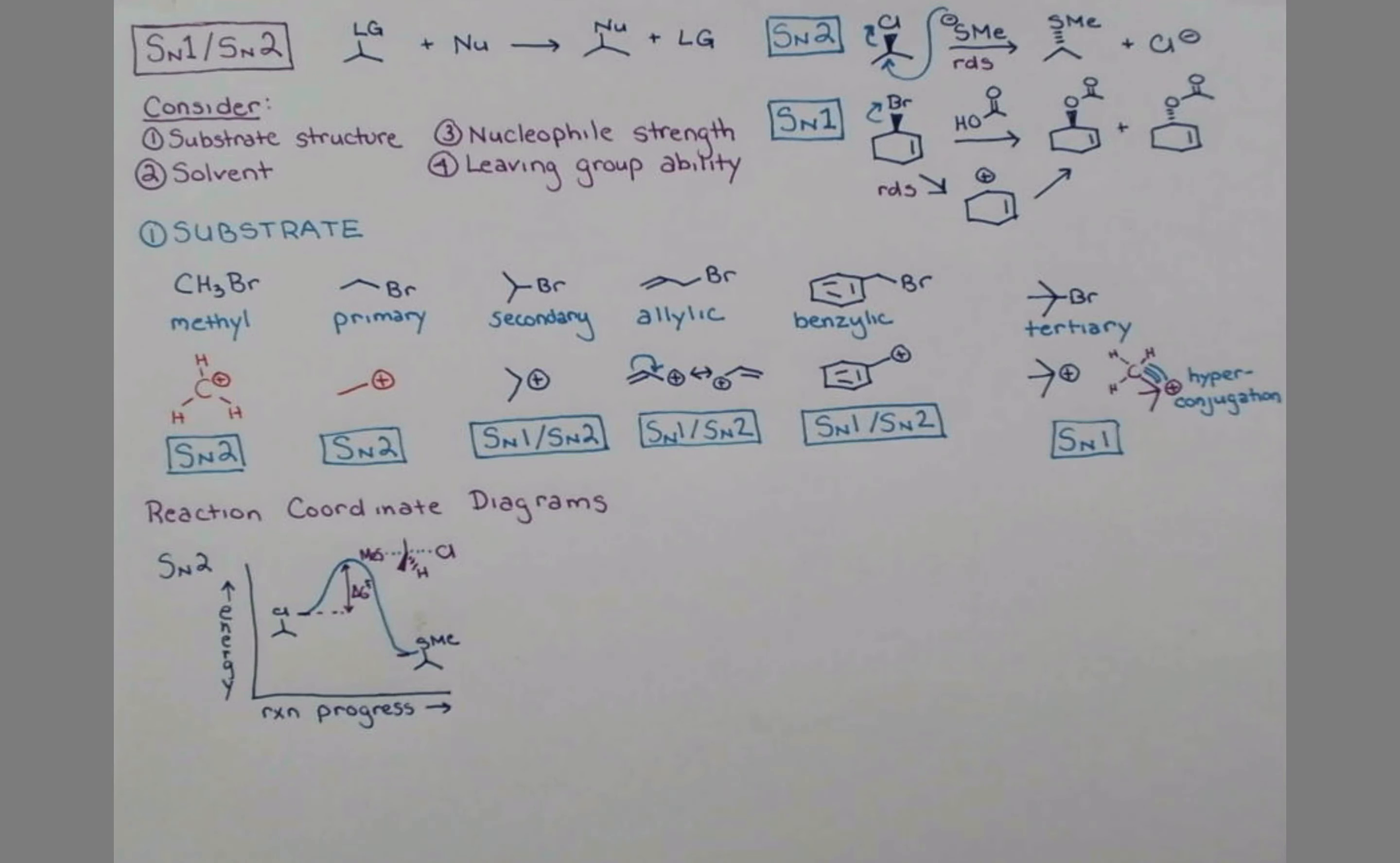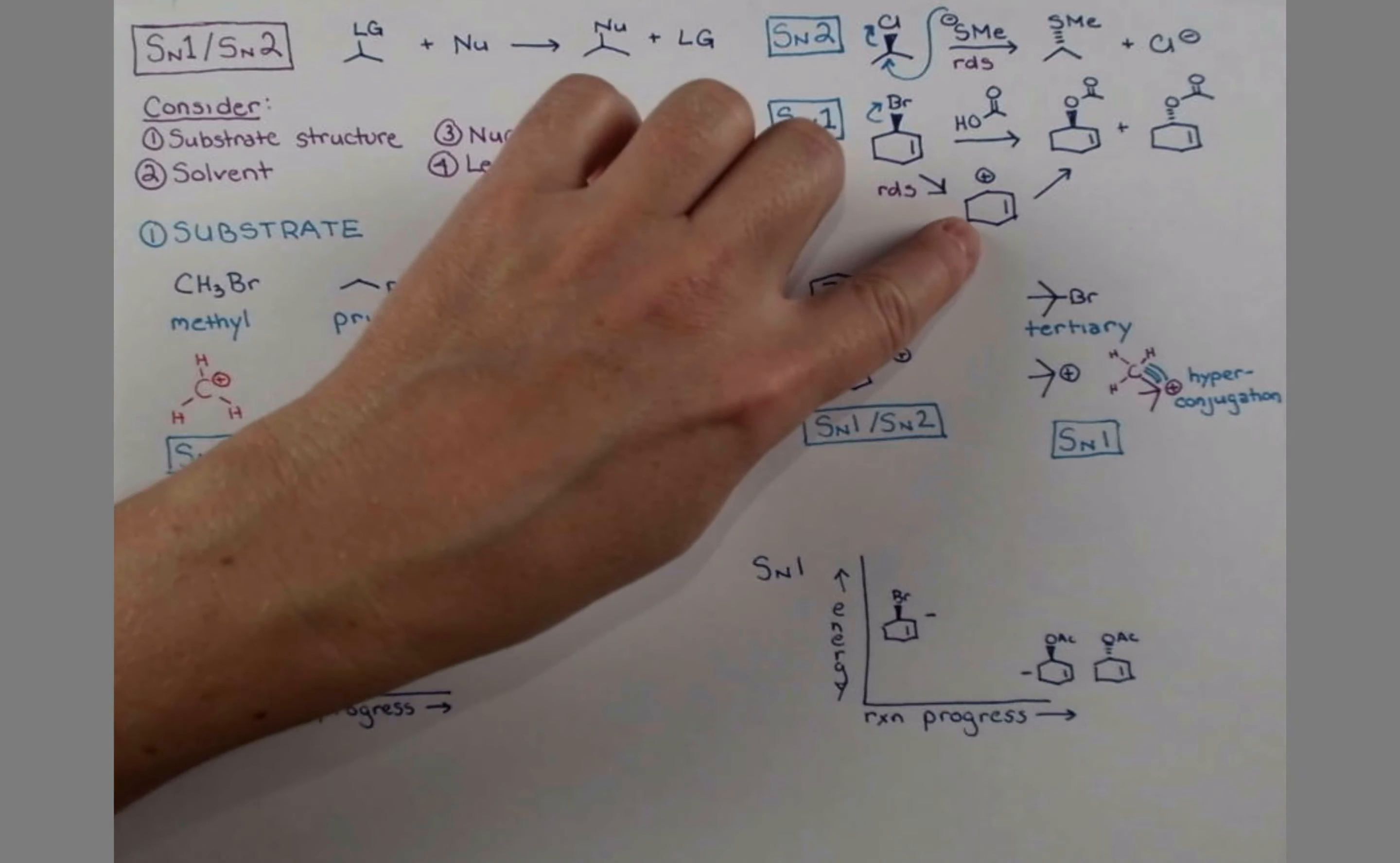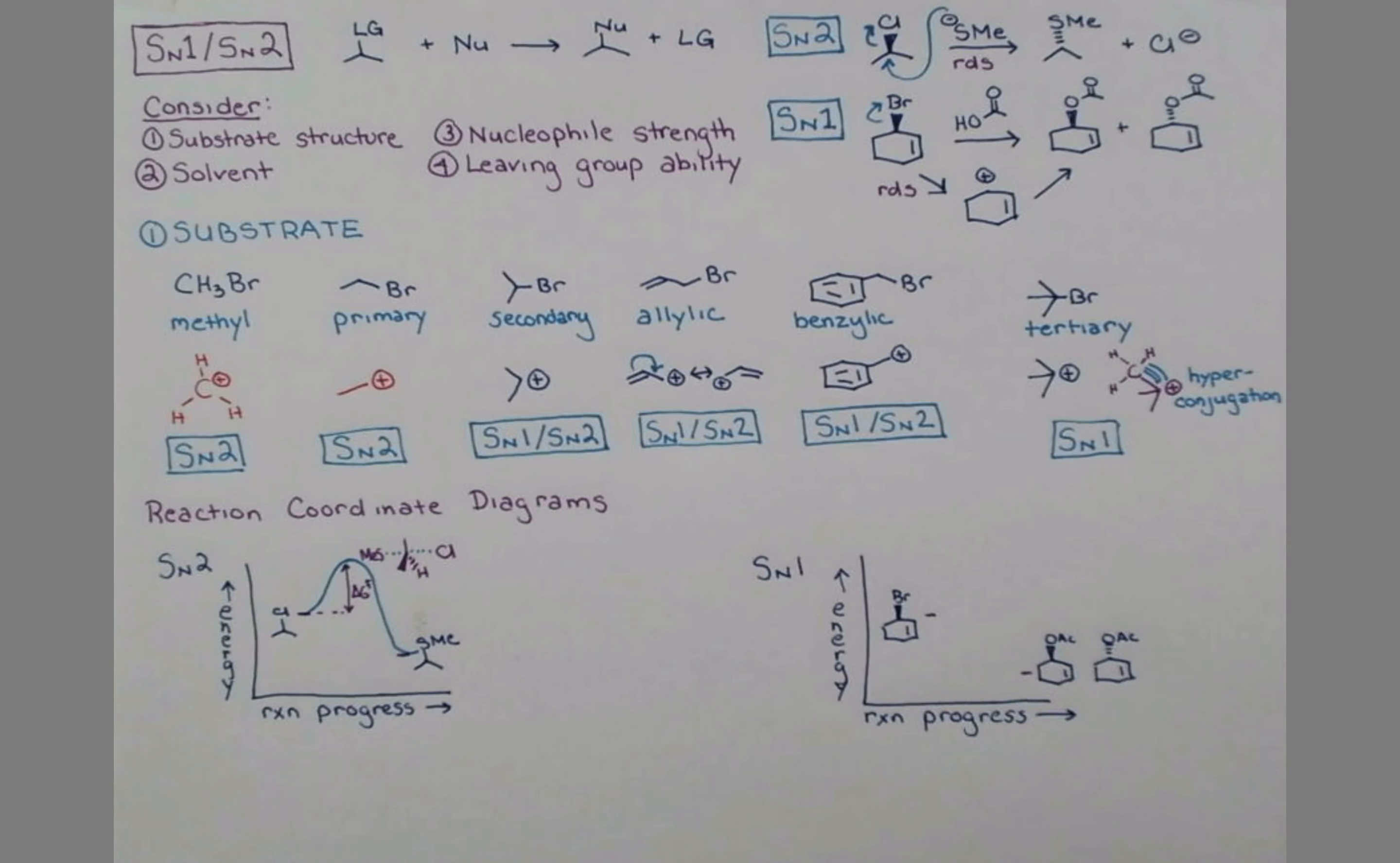Our reaction coordinate for the SN1 reaction looks different. Assuming an exothermic reaction where the products are lower energy than the reactants, we're still going to have to traverse a high energy point. But then we get this intermediate along the pathway. In this case, we get a lower energy dip in the middle where our carbocation intermediate sits. I think looking at these energy diagrams sets us up to consider how solvent affects SN1 and SN2 reactions now.